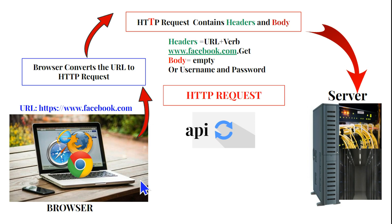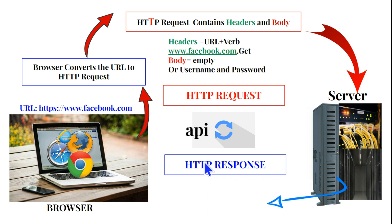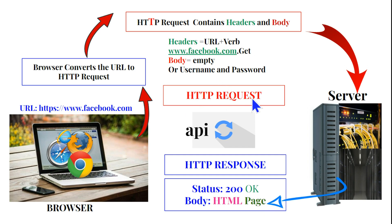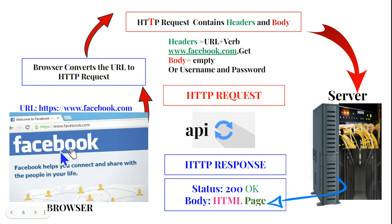There are two things involved: the HTTP request and the HTTP response. Once the request reaches the server, you get a response back. The HTTP response also has two parts: the status and the body. The body contains the HTML page — for example, the Facebook page. The status code, such as 200, means the page was successfully retrieved with no error.